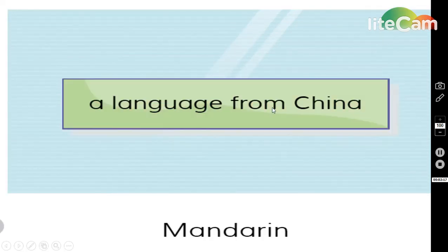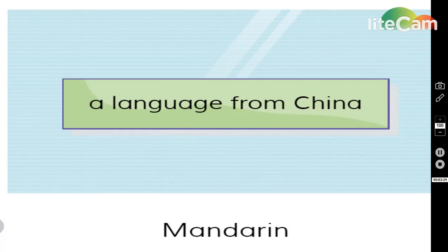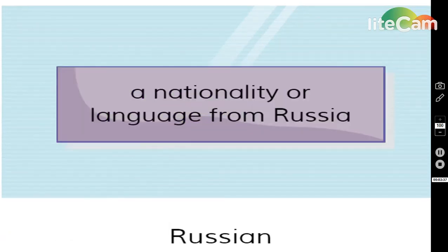Mandarin! Mandarin is a language from China. What does China mean? Al-Sin. Excellent — repeat after me: Mandarin! You are great! And now let's see the next one: Russian! Russian is a nationality or language from Russia. Excellent — repeat after me: Russian!